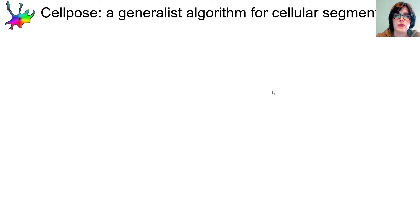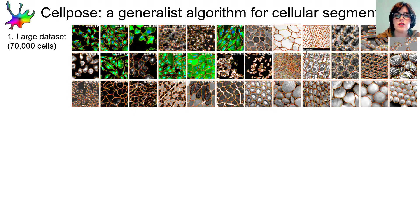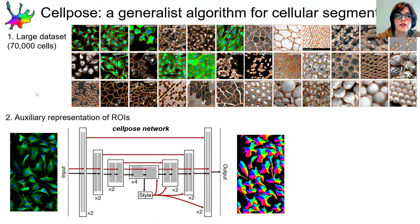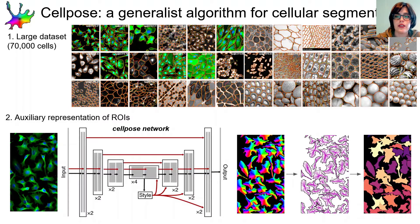CellPose 1.0, this generalist algorithm, worked well because we compiled a large and varied training dataset with 70,000 annotated ROIs. Here are examples of test images in our dataset. We also created an auxiliary representation of these cellular ROIs — the network takes as input an image and is trained to predict flow representations of each cell, where each pixel has a vector pointing towards the center of the cell it's in. The network predicts these flows, we run dynamics on them, and ultimately get out the masks or ROIs for each cell. If we apply CellPose across our test images, the ground truth is in yellow and the predictions are in red — you can see that CellPose can segment a variety of different images.